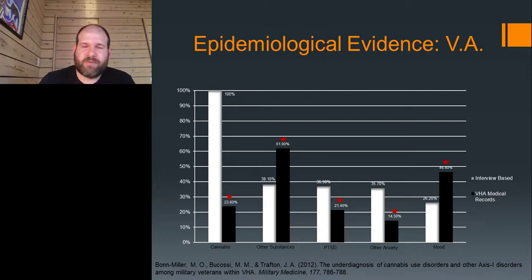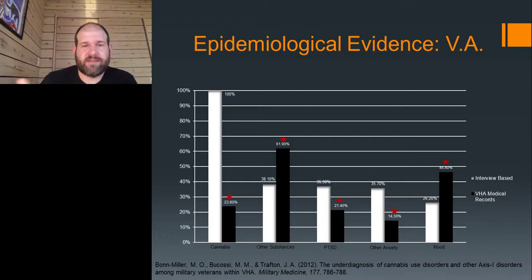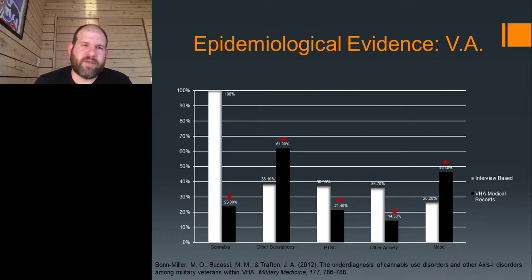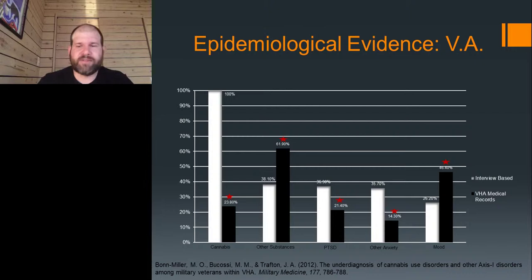This also plays out in medical records. Looking at conducting formal assessments of cannabis use or problems, about half of physicians don't even assess for problems. In one study we looked at all individuals identified as having a cannabis use disorder — that's the 100% on the white bar. Looking in their medical records, only 23% had that identified in their medical records at all. If you're not assessing as a clinician for problems associated with use, we're not able to track from a systems level what's going on or assign appropriate treatments across a healthcare system.